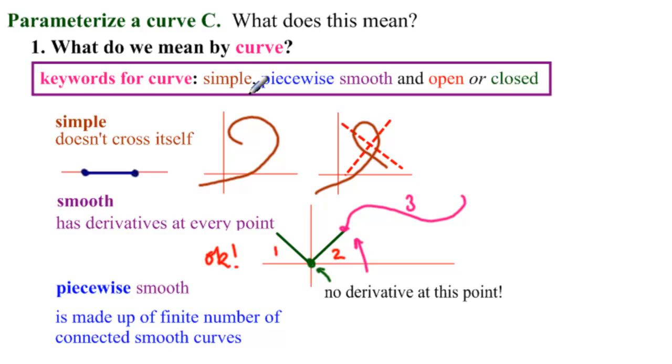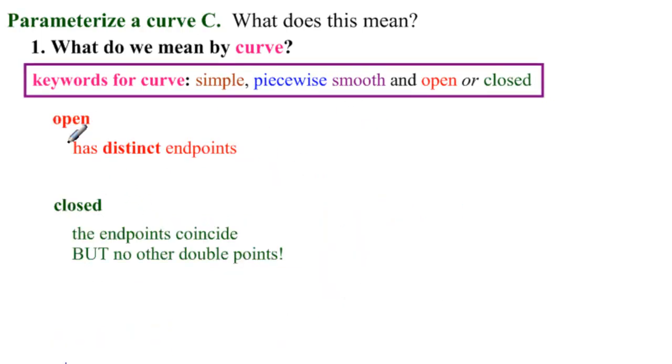We need it to be simple and piecewise smooth. And we're going to talk about open or closed. What do we mean by open? That means it has distinct endpoints. So if we're looking at 2D, this curve here has distinct endpoints.